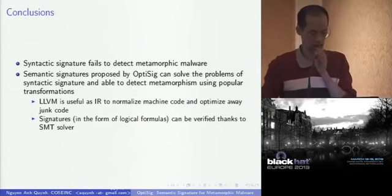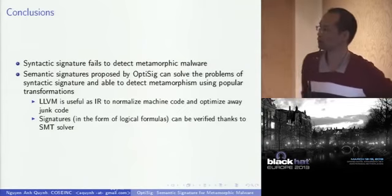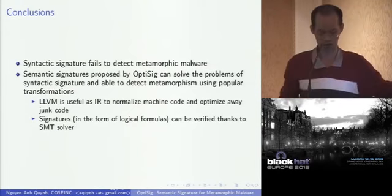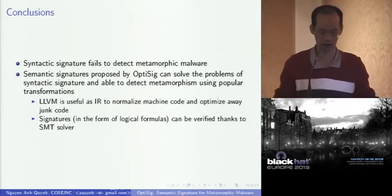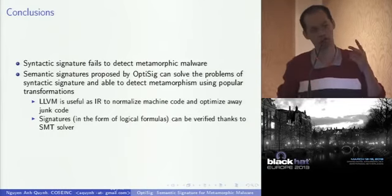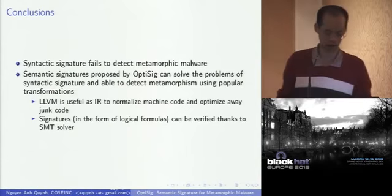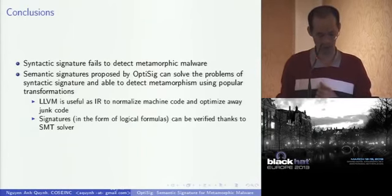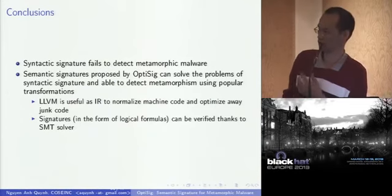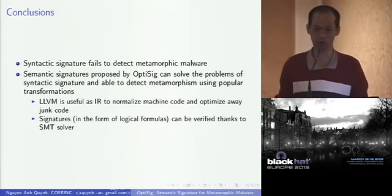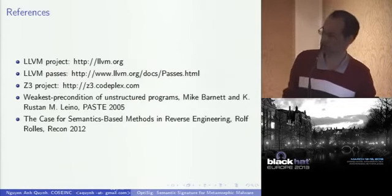Conclusion: Syntactic signatures totally fail to detect metamorphic malware. We propose OPTISIG, which uses semantic signatures, and it can solve the problems of syntactic signatures and detect metamorphics using the four popular transformation techniques. We use two key technologies: LLVM, which we use to normalize the machine code and optimize away junk code; and the SMT solver, where we generate a logical formula from the normalized code and use the solver to verify the equivalence of the formulas.